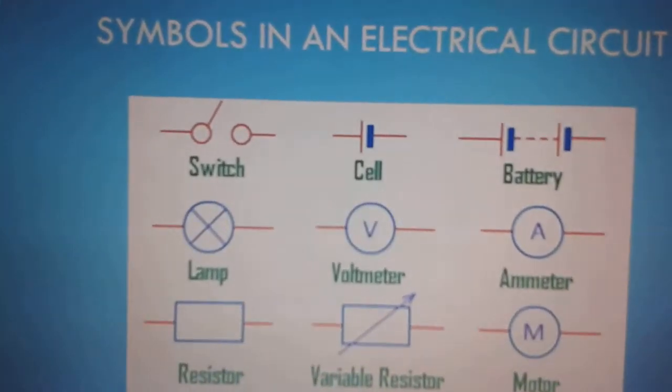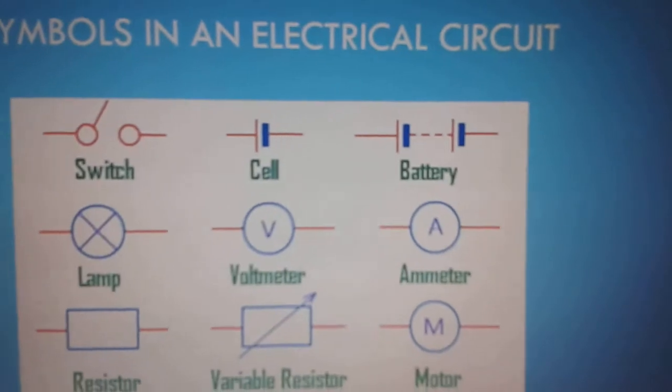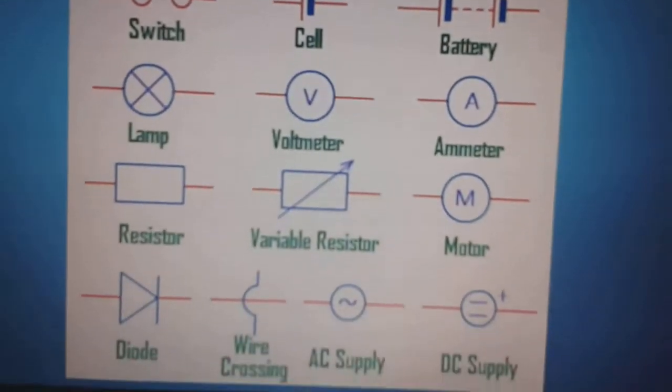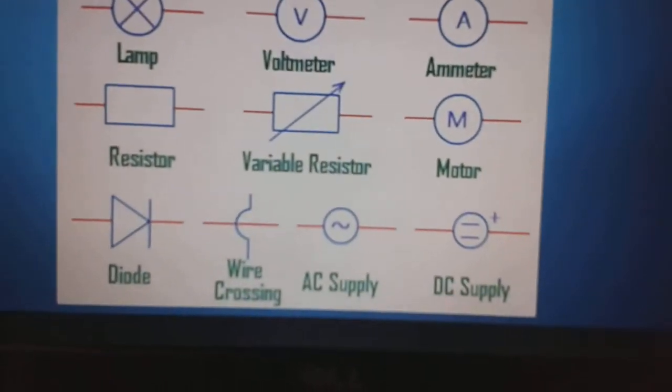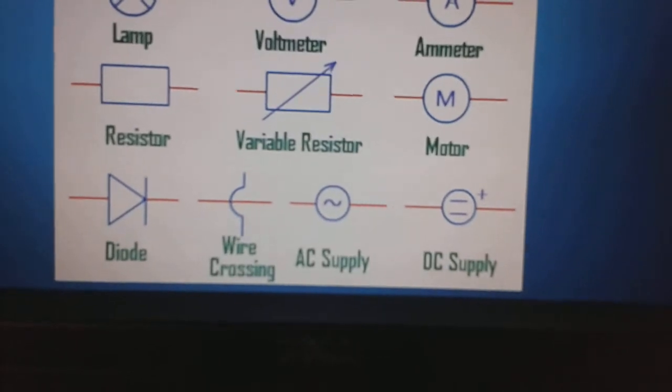There's a switch, cells, batteries, a lamp, voltmeters, ammeters and the rest, resistor, variable resistor.